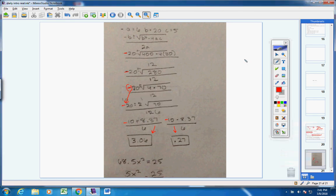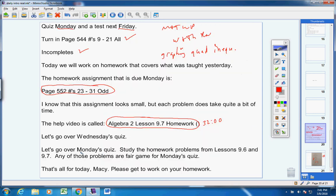So that's it. 95 on your quiz. Excellent job. Now, let's go over Monday's quiz. On Monday, I'm going to quiz you on homework 9-6 and 9-7. You're doing 9-7 today. Please, Macy, study all of these problems. Any of these problems from 9-6 and 9-7 are fair game for your quiz. So study well.